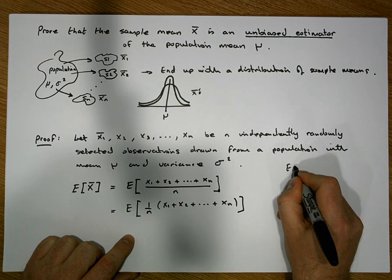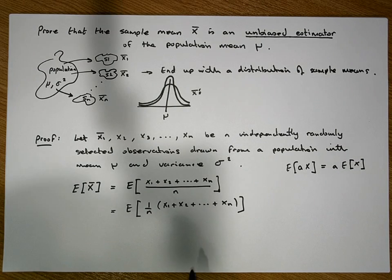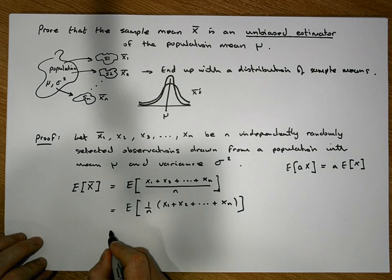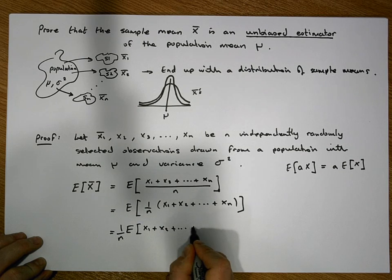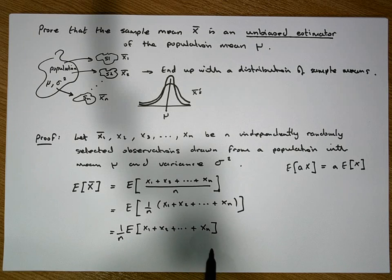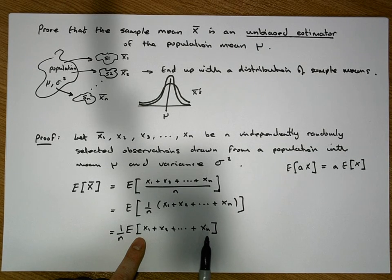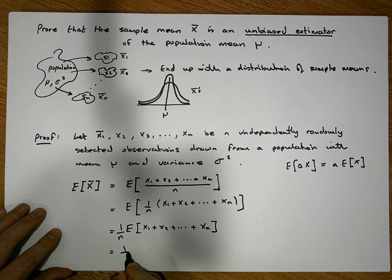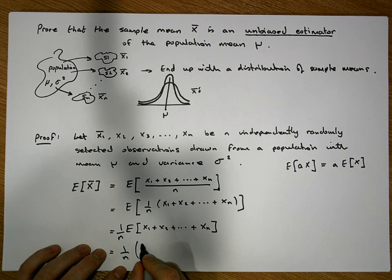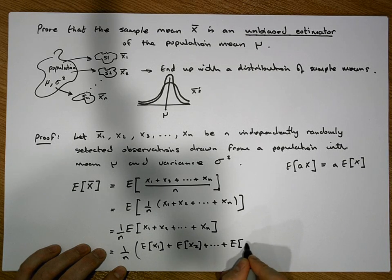One of our rules says that the expected value of a times a random variable equals a times the expected value of the random variable, so we can take the constant 1/n outside the expectation. This becomes 1/n times the expected value of (x1 + x2 + ... + xn). And we also know that the expectation of a summation of random variables is the same as the sum of the expectations. So this is 1/n times the sum: E(x1) + E(x2) + ... + E(xn).